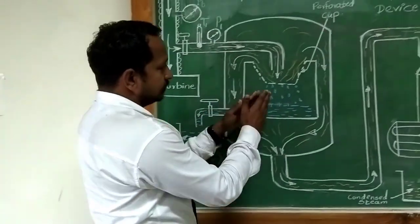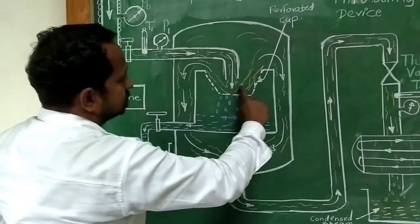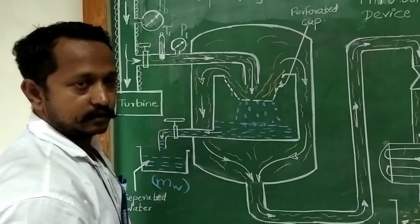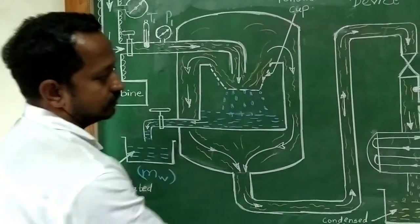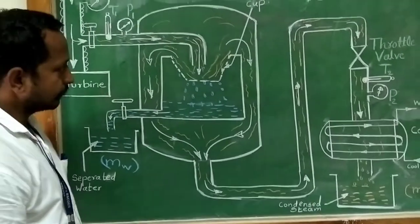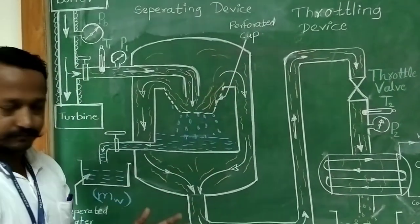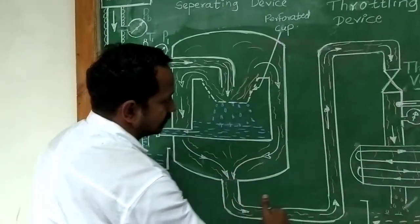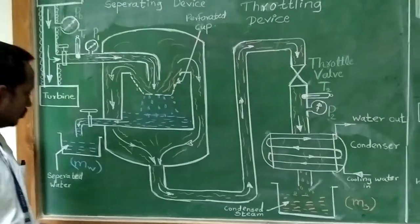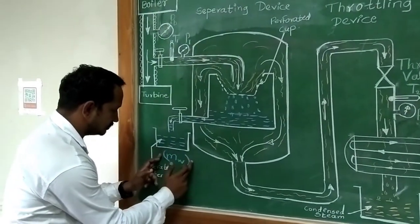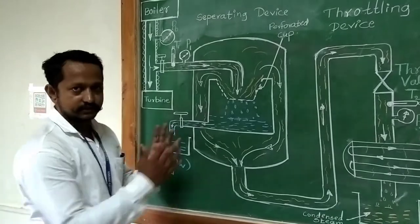You can see here, when this total steam is impinging on the perforated cup, some of the dry steam is getting away and it is sent forward to the next device, that is the throttling device. So, this steam, which is approximately dry steam, is then taken to the throttle valve. Here, first of all, the reading Mw is important to calculate some of the dryness fractions.